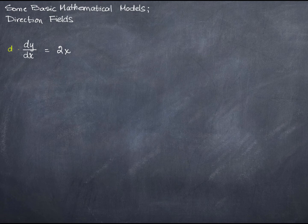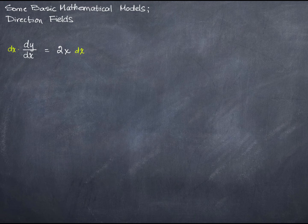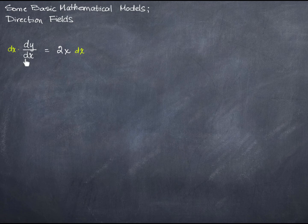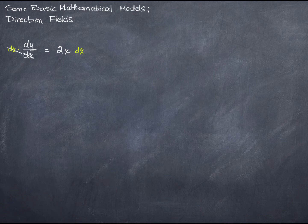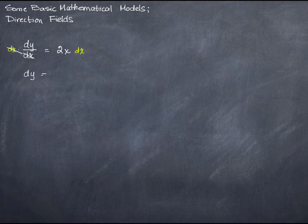We have to be careful here because dx is not a fixed quantity. It's a small change in the x direction. But whatever it is, it's going to be the same here as it is here. So I can multiply both sides by that quantity. And that gives me dy equals 2x dx.